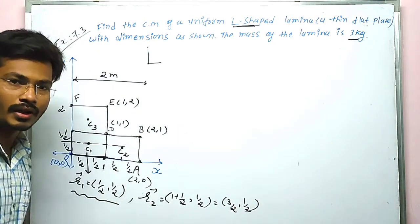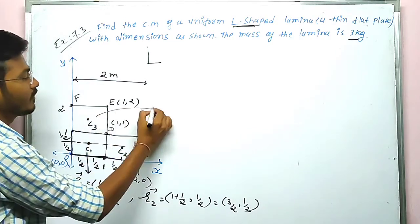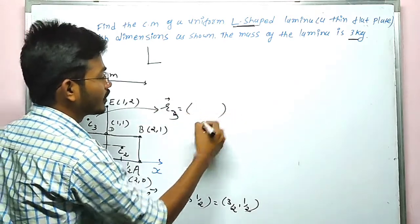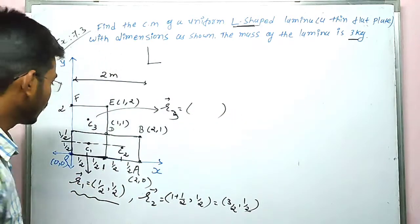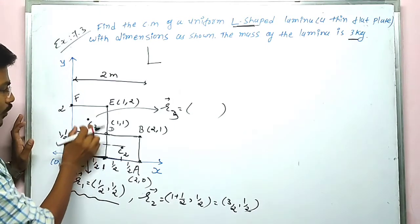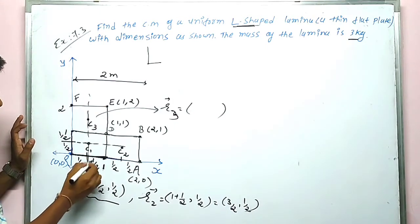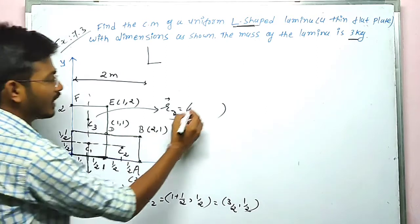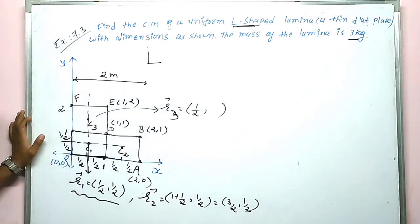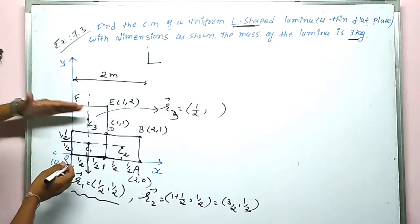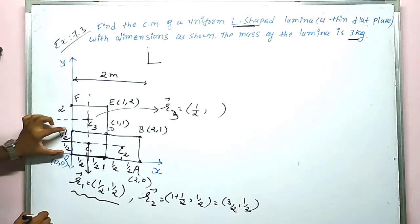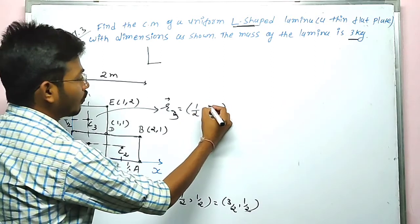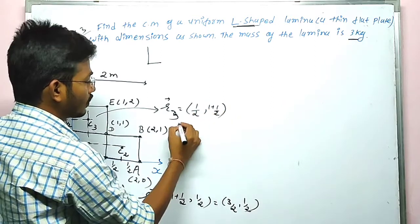Now we find vector r3 for center c3. From the figure configuration, the x-coordinate is 1/2 and the y-coordinate is 1 plus 1/2, which gives 3/2. So vector r3 is (1/2, 3/2).